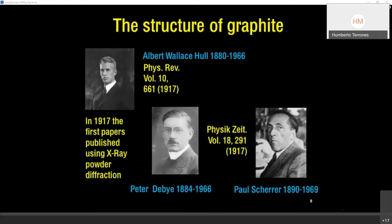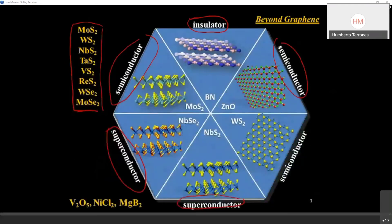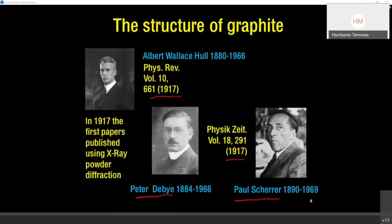The first experiments to elucidate the structure of graphite were carried out using X-ray diffraction in 1917 by Albert Wallace Hall and by Peter Debye and Paul Scherrer. They found that graphite was made of layers and that the structure was a honeycomb — every atom at every vertex connected to three others, forming a hexagonal mesh. At that time the known structure was fine; the problem was the stacking — how the layers were arranged.